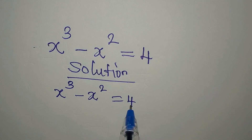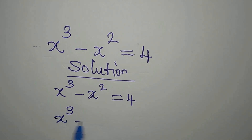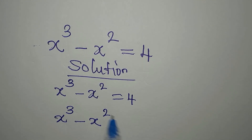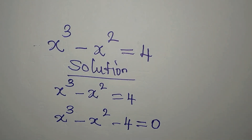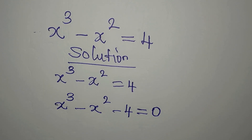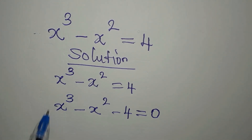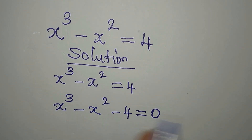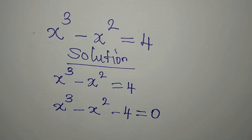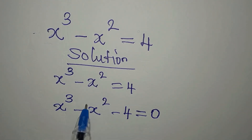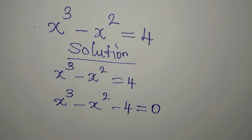Let's bring this to the left, so we have x to the power of 3 minus x to the power of 2 minus 4 equals 0, because there's nothing on the right-hand side. There's nothing common to these three terms — these two have something in common but this does not have anything in common with the others.